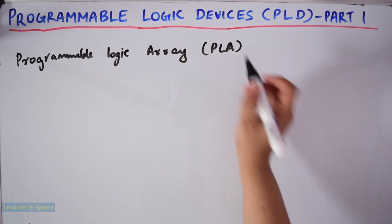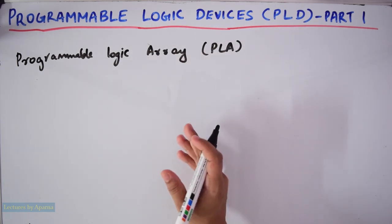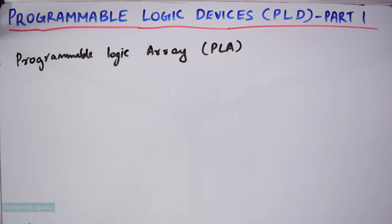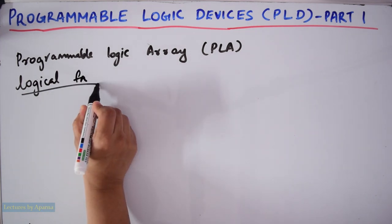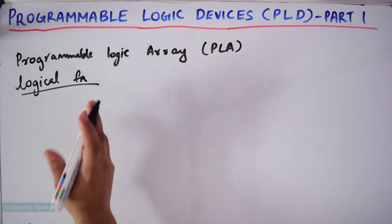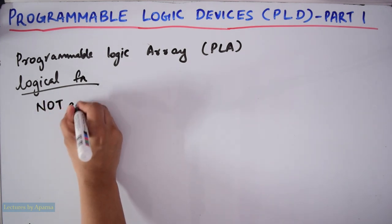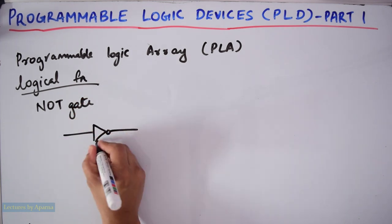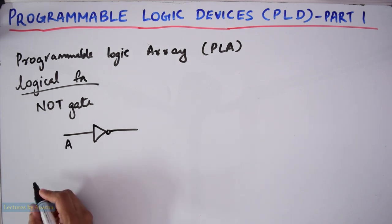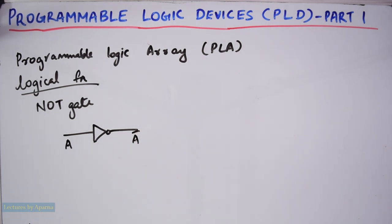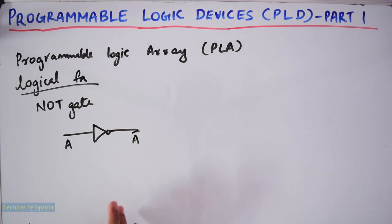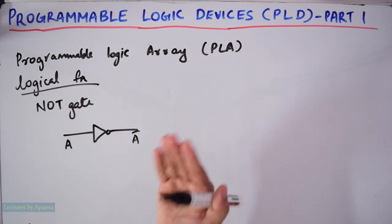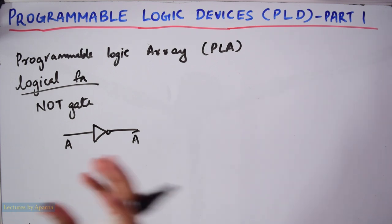So let us see what is a Logic Device. A Logic Device will perform a definite logical function, which is decided at the time of manufacture and will never change. For example, a NOT gate. Let A be the input given to it and at the output we get the inverted form of the input. An IC which contains NOT gates will become a logic device and you can use this device in circuits.